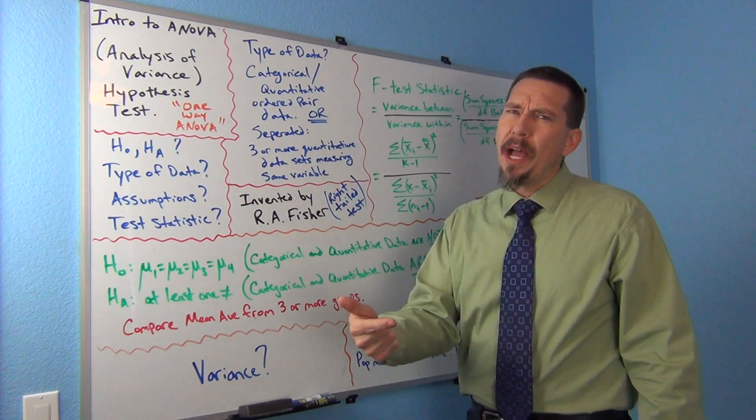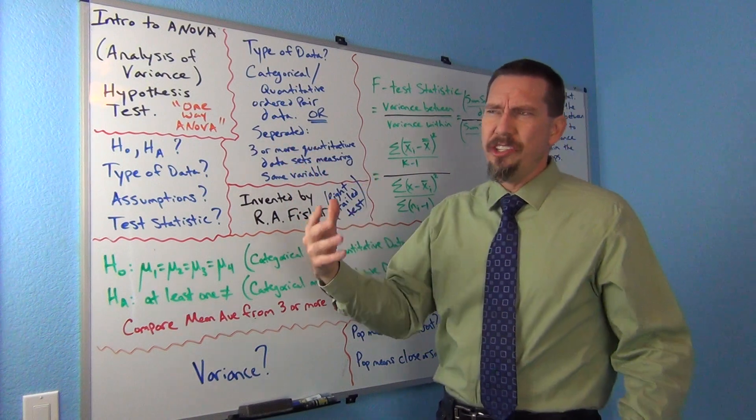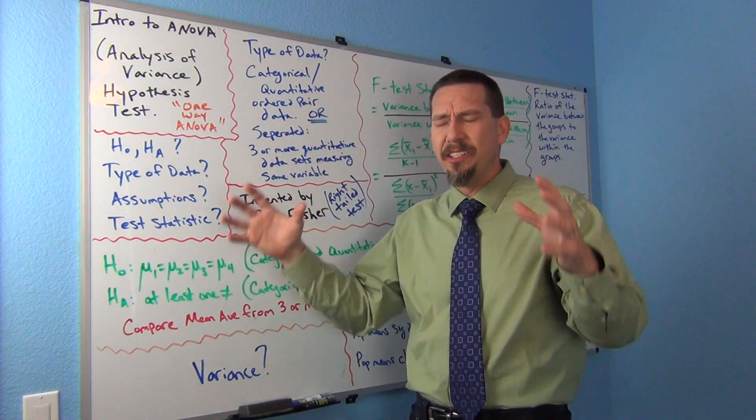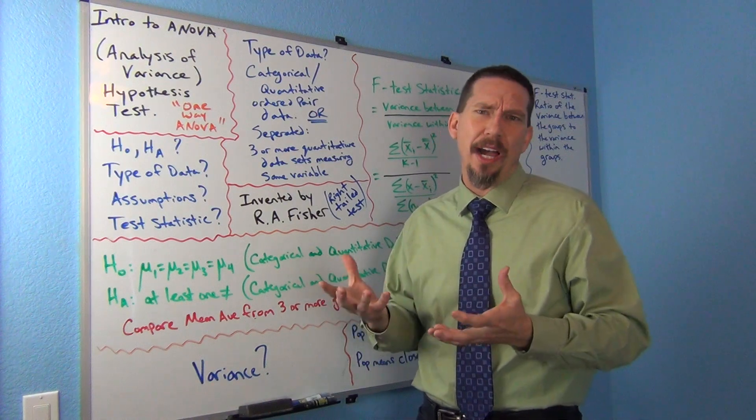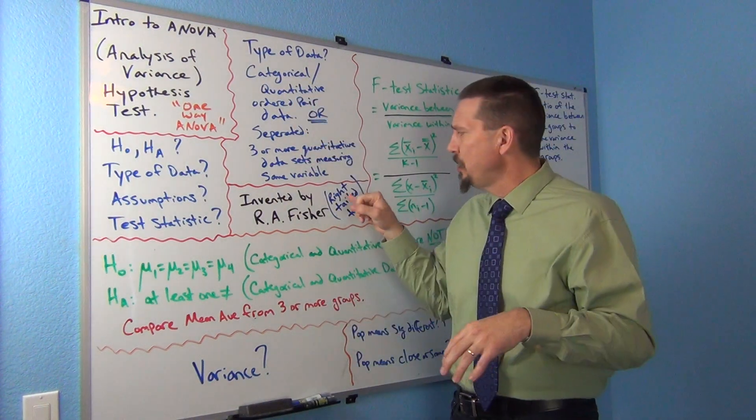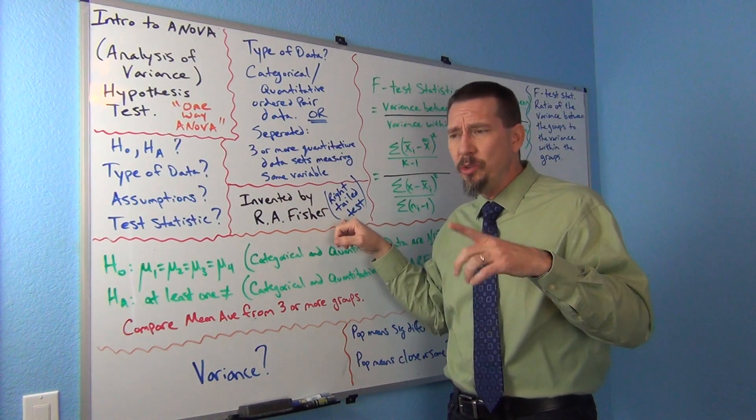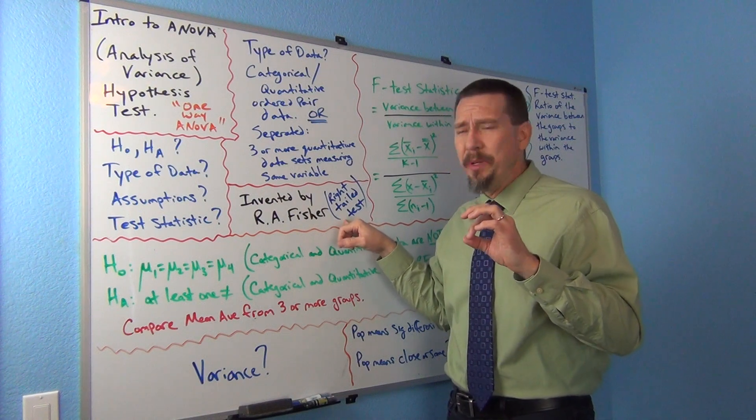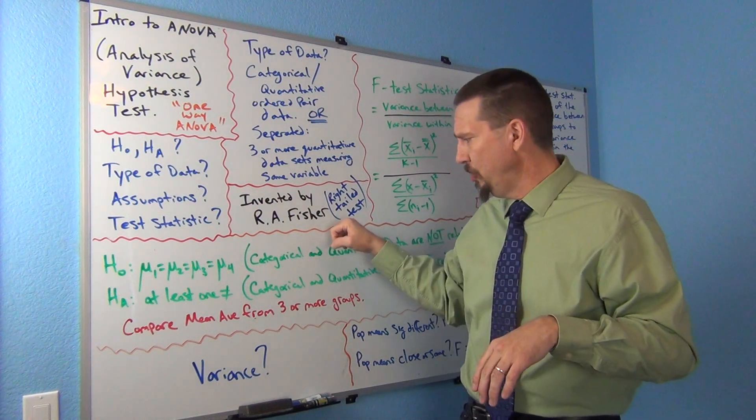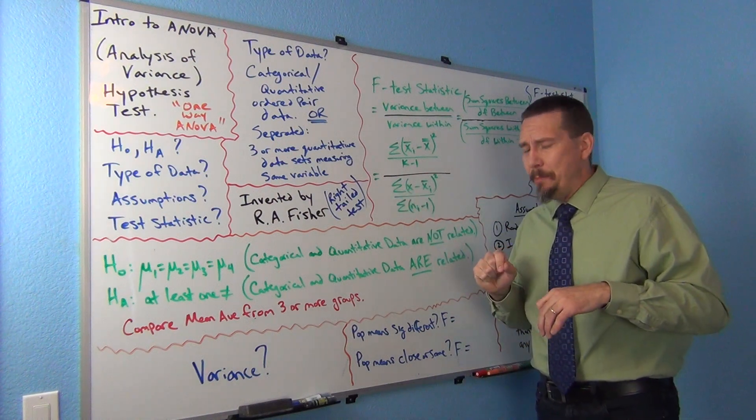But when you get to multiple populations, once you get beyond two population, everything changes. Usually what they try to do now is condense it into one right tailed hypothesis test. And that's what ANOVA does. It kind of condenses it. So think of it as a right tail test. And when we calculate the p-value or we use randomized simulation, it's always going to be in the right tail when you're dealing with ANOVA. And there's some reasons behind that.